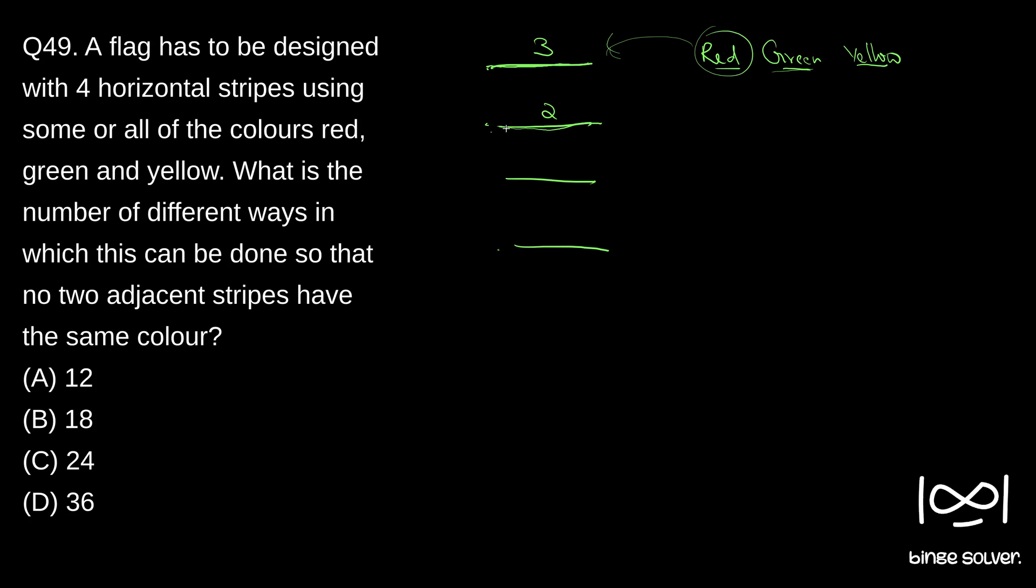Now we are moving on to the third stripe. What is the restriction? So here there will be some color painted, right? Out of these three colors, one color will be painted for the second stripe. That color should not occupy here, so we will be again left with two choices. So we have two choices to paint here.